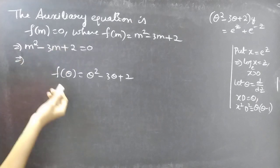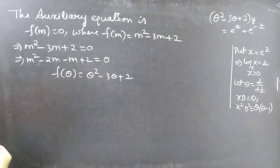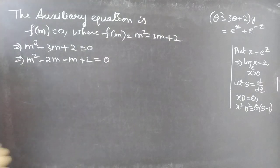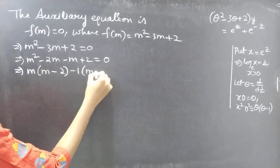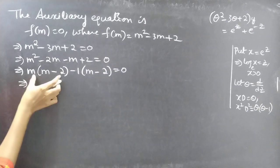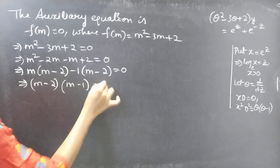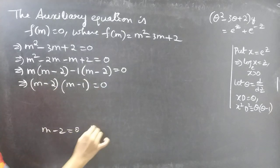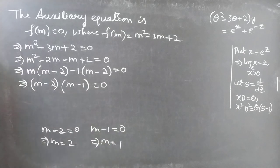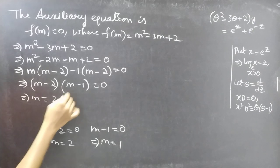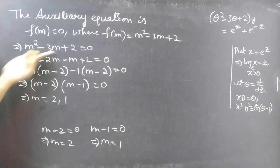Now split minus 3m as minus 2m and minus m. We get m squared minus 2m minus m plus 2 equals 0. Taking m common from the first pair and then factoring: m times (m minus 2) minus 1 times (m minus 2) equals 0, giving (m minus 2)(m minus 1) equals 0. Equating each factor to zero: from m minus 2 equals 0 we get m equals 2, and from m minus 1 equals 0 we get m equals 1. So m equals 2 and m equals 1 are the roots of the auxiliary equation, which are real and distinct.